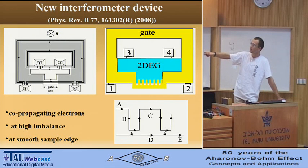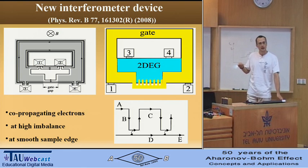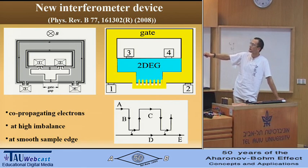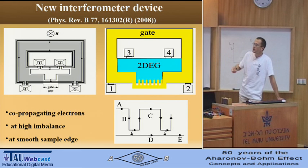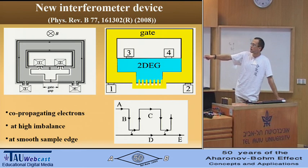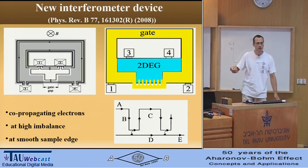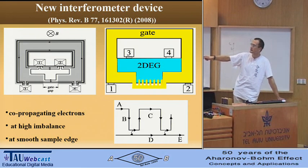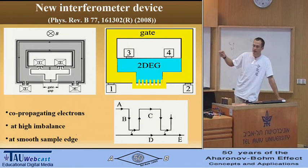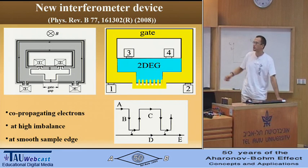We also use a gate to deplete the two-dimensional electron gas under the gate to a lower filling factor. For example, in a quantizing magnetic field, we can obtain filling factor two for the two-dimensional electron gas here and filling factor one here. What does this mean for edge states? Under the gate, there is one edge state going along the sample edge. Here there should be two edge states because of filling factor two — one edge state goes along the gate edge. These two edge states are connected and run together for some distance. These edge states originate from different contacts, so they are independently contacted, and I can apply an electrochemical potential imbalance between these two edge states.